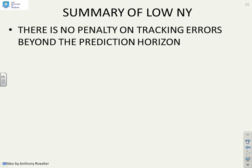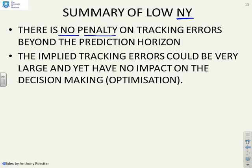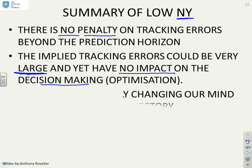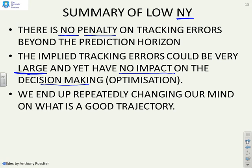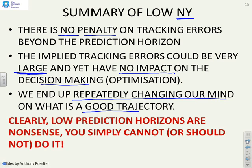So a summary: if you were to use a low value for ny or low prediction horizon, there is no penalty on tracking errors beyond the prediction horizons. And the implied tracking errors beyond could be very large. And even though they're very large, they've got no impact on your decision making. And you can immediately see, well, that doesn't make sense. If I've got large errors beyond, surely they should influence my decision making. So what happens as a consequence is we end up repeatedly changing our mind on what is a good trajectory, which undermines the fact that you're doing an optimization in the first place. So clearly low prediction horizons are nonsense. You simply cannot or should not do it.